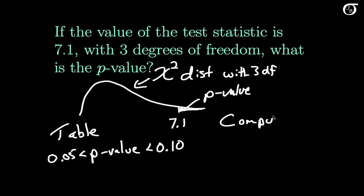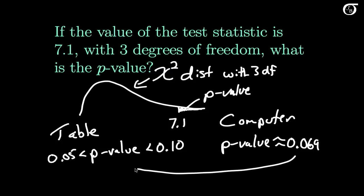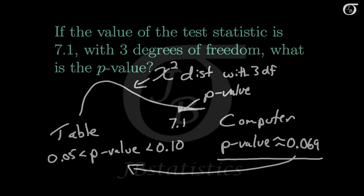Some other computer packages would work just as well, of course. My computer tells me that my p-value is 0.069 approximately, which of course does fall in the range given to us by our table, but it is better to use a computer if we can and get that exact value. We would use that p-value and draw an appropriate conclusion for whatever problem we were faced with.